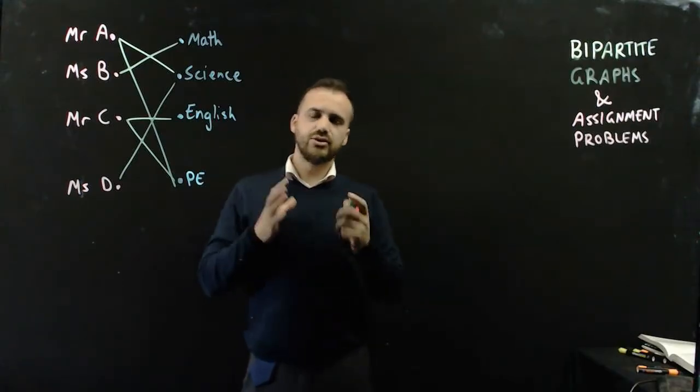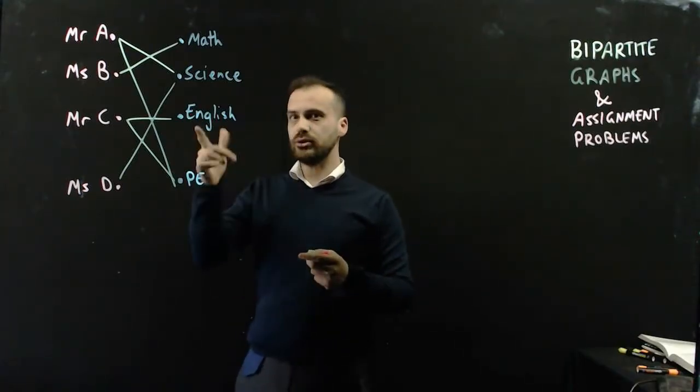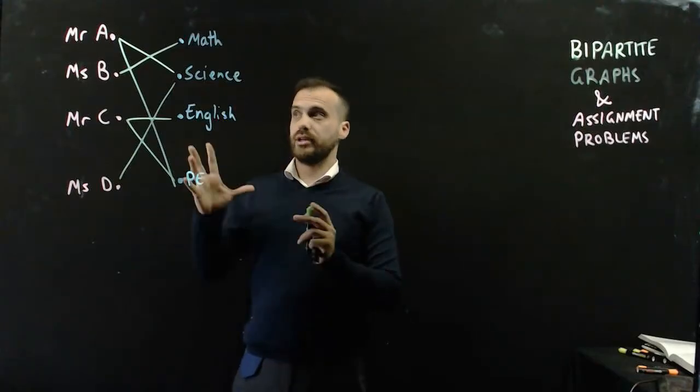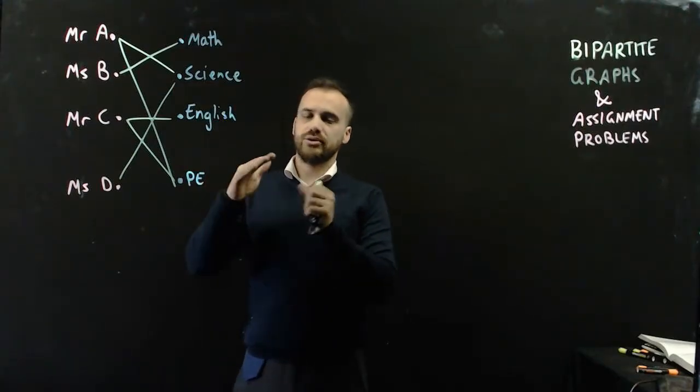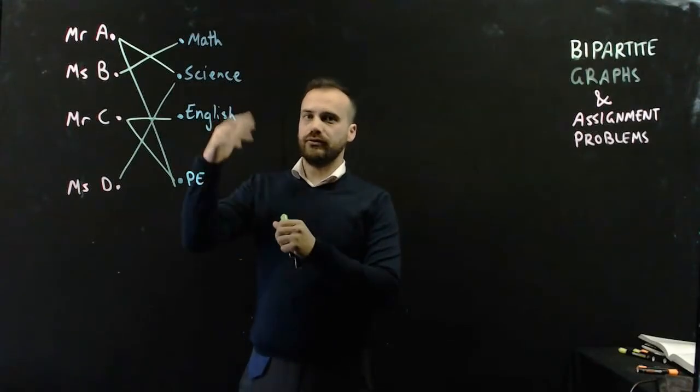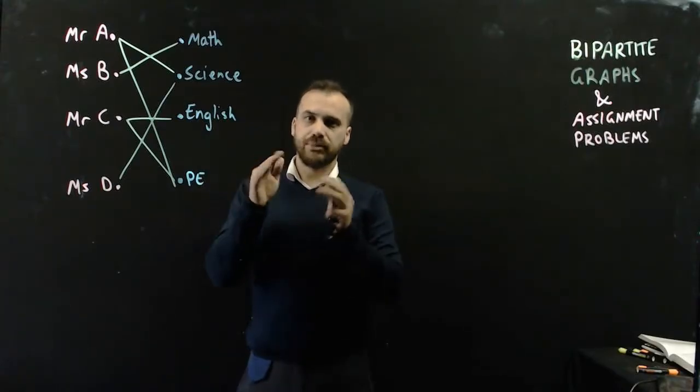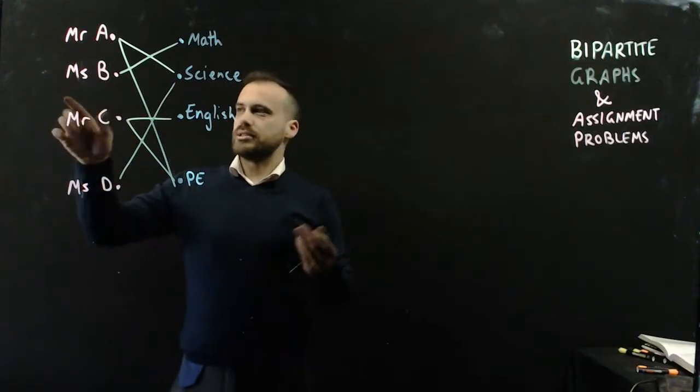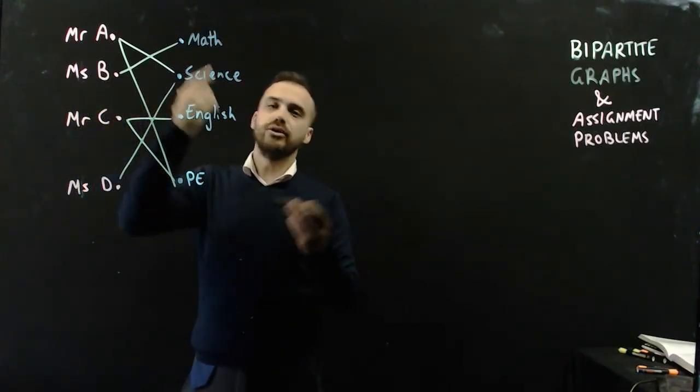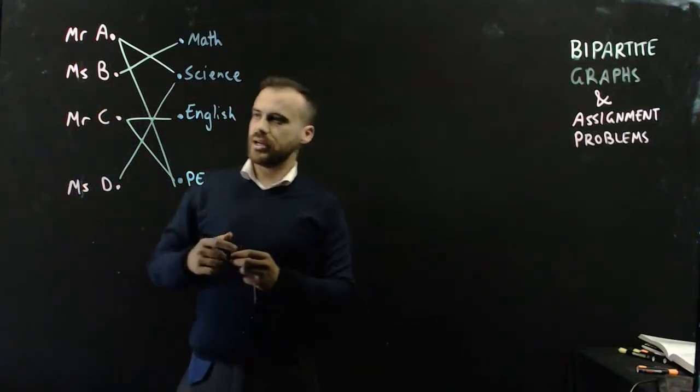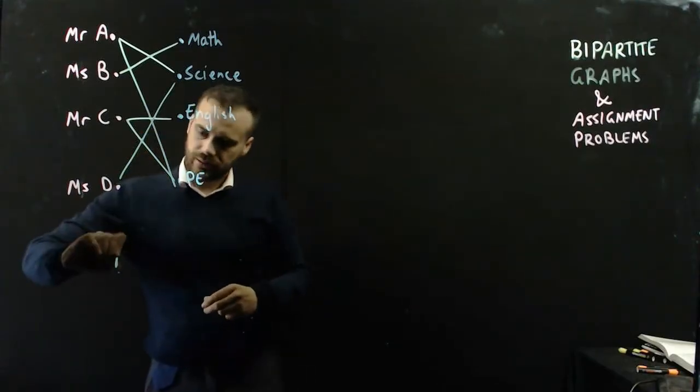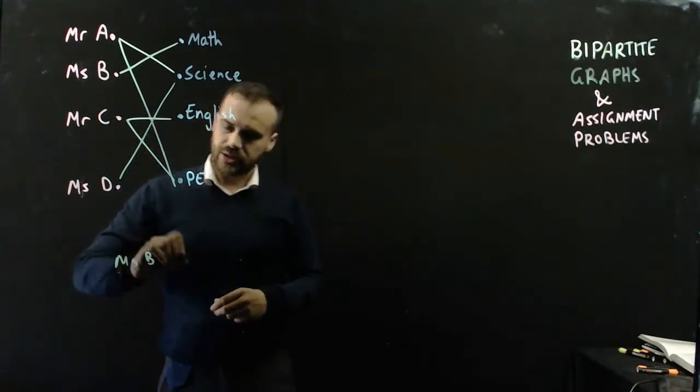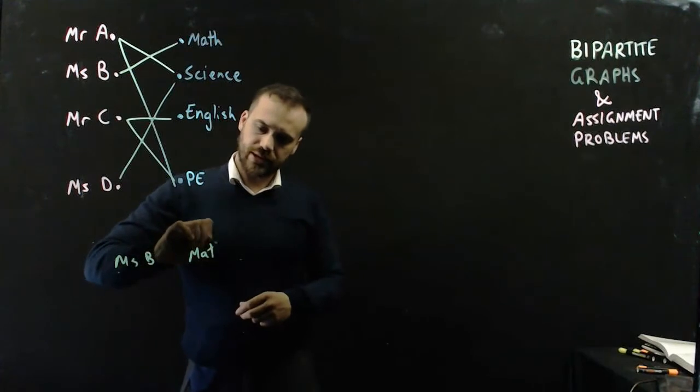The easiest way to do this is to look at this and say, who can do the least amount of subjects? Who has the most specialized skill set? We can see, we don't have a choice with Ms. B. She can only teach maths. So, let's assign Ms. B to teach maths. That's nice and straightforward.